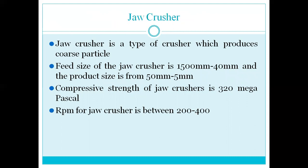A jaw crusher is a type of crusher which produces coarse particles. The feed size of this jaw crusher is 1500 mm to 40 mm and the product size is from 50 mm to 5 mm. The jaw crusher is inputted with aggregate sizes of 1500 mm to 40 mm, and the compression force reduces the input material so the output size varies from 50 mm to 5 mm.